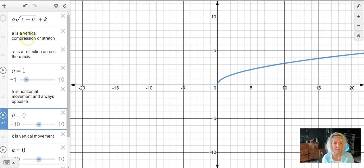Remember that a is a vertical stretch or compression, and if a is negative, it is a reflection across the x-axis.